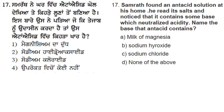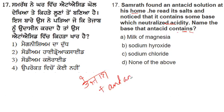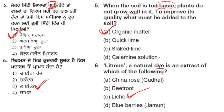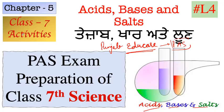Smarth found an antacid solution at home. He read the label and noticed it contains a base which neutralizes acidity. What is the base that the antacid contains? The antacid contains milk of magnesia — magnesium hydroxide — as its base. This is an important question likely to appear on the paper.